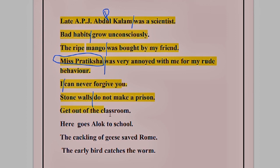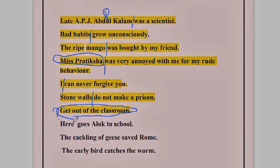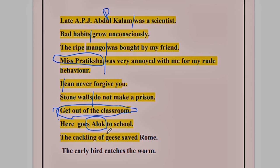Seventh: 'Get out of my classroom.' There is no subject here — this is rule number two. Imperative sentences do not require subjects, so the whole thing 'get out of the classroom' becomes the predicate. Eighth: 'Here goes Alok to school.' Alok is the subject — Alok is the person going to school — and the rest is the predicate. Ninth: 'The cackling of geese saved Rome.' We are talking about the cackling of geese, so 'the cackling of geese' — the whole thing — is the subject, and 'saved Rome' becomes the predicate.